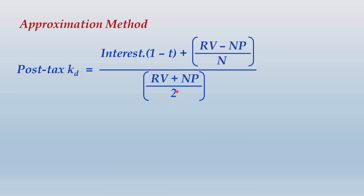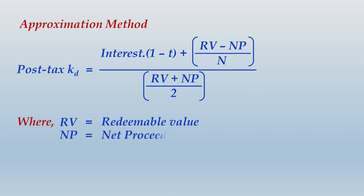To define the variables: RV stands for redeemable value, NP stands for net proceeds, n is the life of debt, and t stands for tax rate.